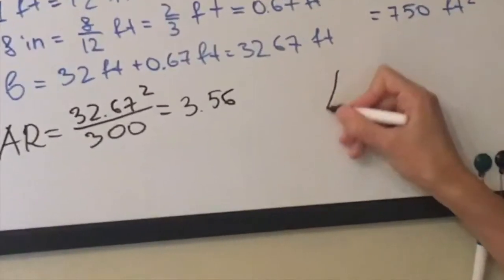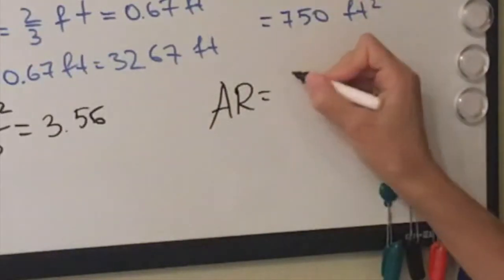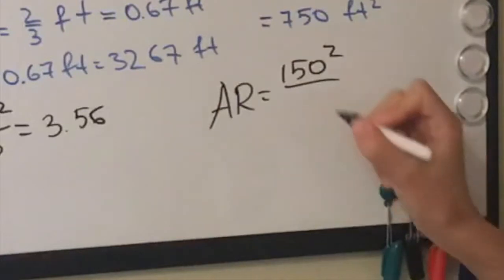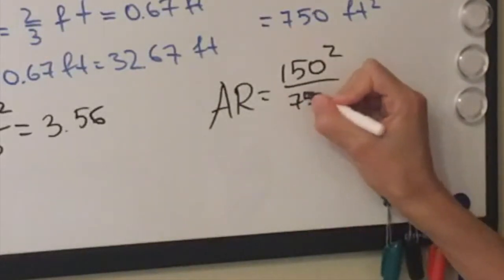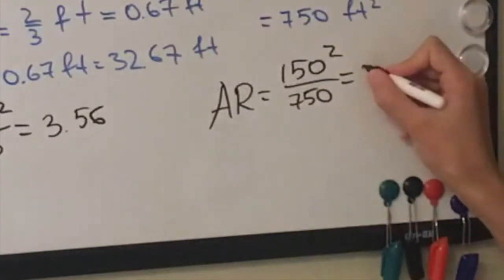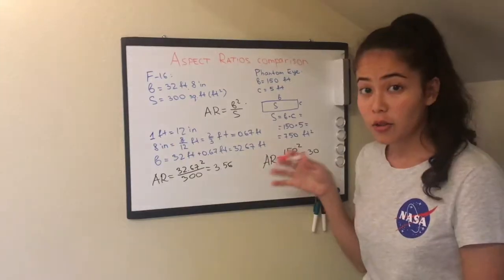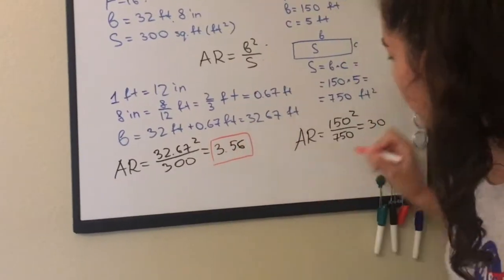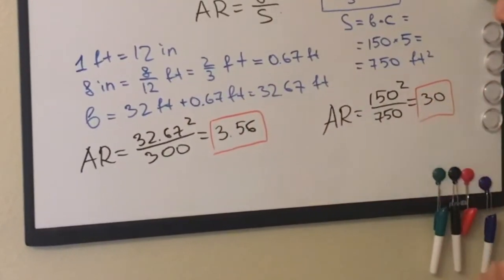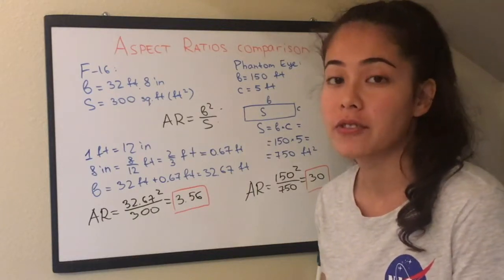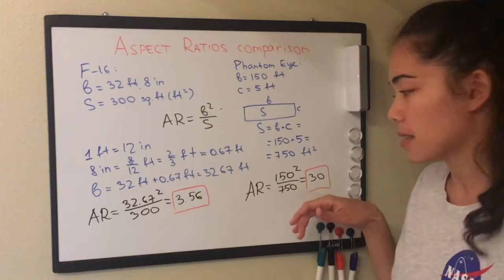And for Phantom Eye we do the same. We divide 150 squared by 750. And after you calculate it this will give you exactly 30. Okay so here we have the results, 3.56 and 30. But in any problem after you have found out the result you need to think about what it means.